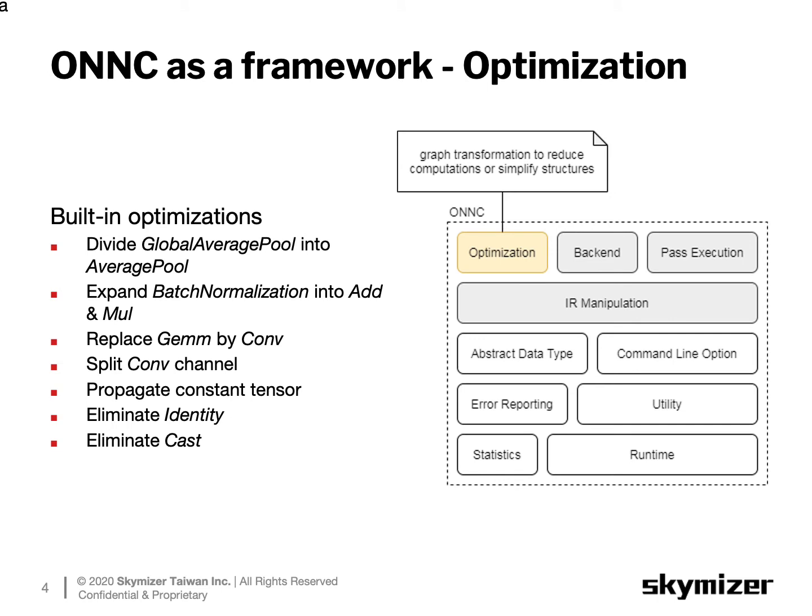First, let's take a look at the optimization library. If you are new to the ONNC project, or you just want to use ONNC as a tool for your project, this library is probably the best starting point for you. You can learn how to write an optimization pass without knowing too much about the whole framework. The optimization library consists of many optimization passes, and each optimization pass is designed for a specific purpose.